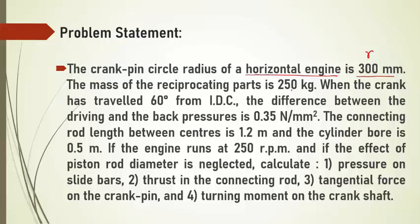The mass of the reciprocating parts MR is given as 250 kg. The crank angle theta is measured from the inner dead center of the horizontal engine. The difference between the driving and the back pressure, that is P1 minus P2, is given as 0.35 N/m². The connecting rod length L is given as 1.2 m. The diameter of the cylinder D is given as 0.5 m. The engine speed is given as 250 rpm.